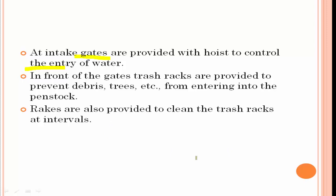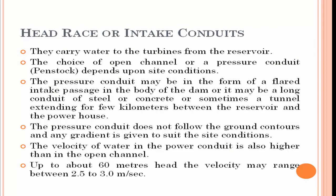Next is the head race or intake conduits — this is the second stage. They carry water to the turbines from the reservoir. We have two categories: open channel and pressure conduits. The open channel will be completely open with water flow, whereas pressure conduits are like a pipeline. The pressure conduits may be in the form of a plate intake passage in the body of the dam, or long conduits of steel or concrete, sometimes a tunnel extending for a few kilometers.